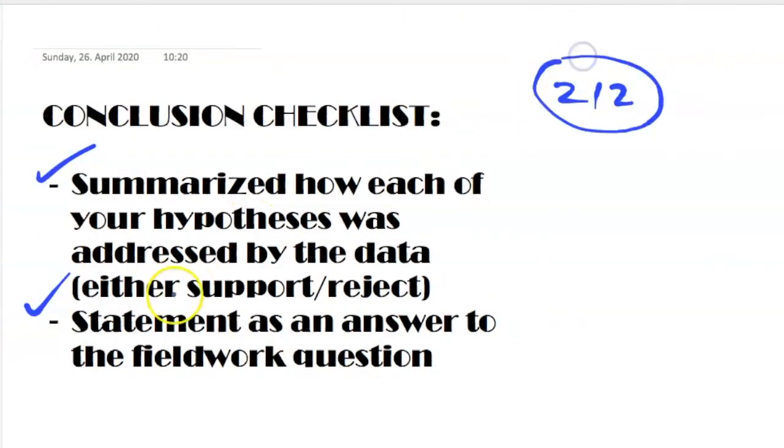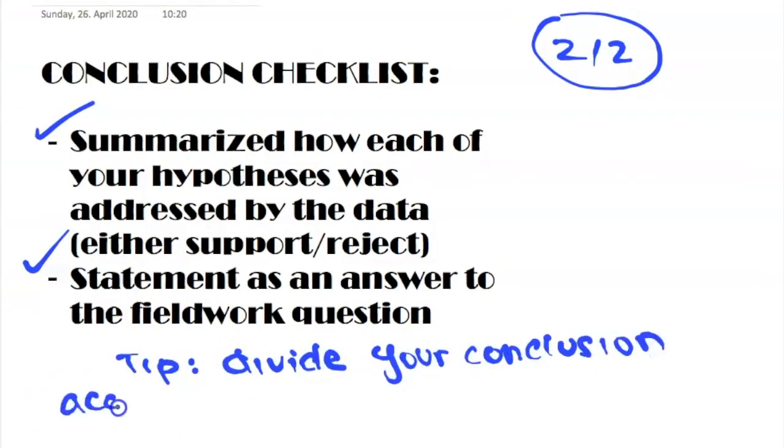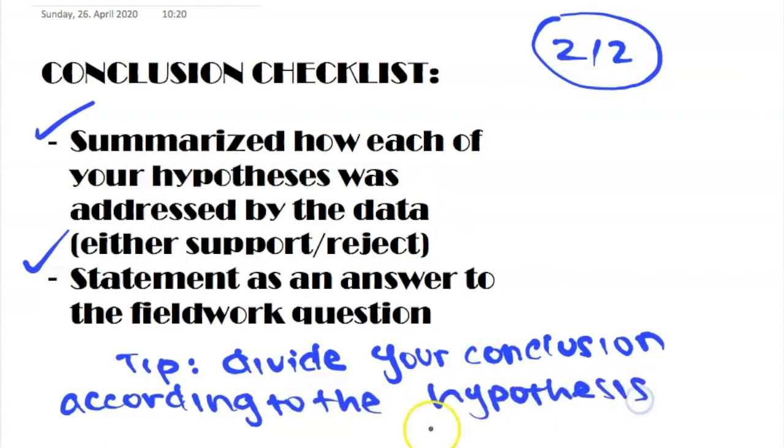And then for your conclusion, you can only get two marks for your conclusion. So the main things you just want to cover is that you want to summarize how each of your hypothesis was addressed by the data. And you want to have a final statement as an answer to the fieldwork question. You want to give a concrete conclusion as to what your data says about the fieldwork question. A little tip that I have is to actually divide your conclusion. So if you have three hypotheses to have your conclusion and then hypothesis one, the conclusion for that, for the hypothesis one, hypothesis two, conclusion for that hypothesis and so forth. And then the last sentence being the answer to the fieldwork question so that the examiner knows for sure that you answered each of the hypothesis.